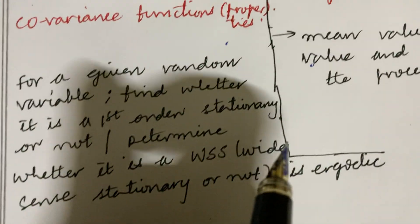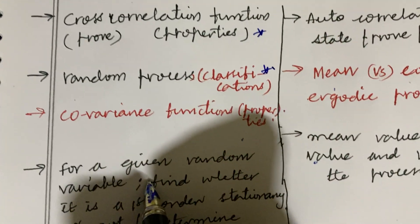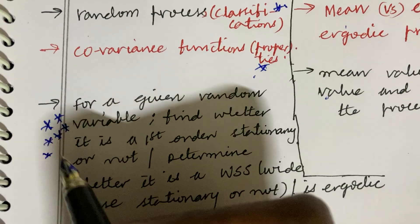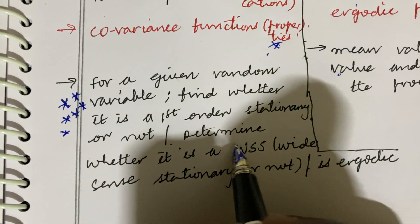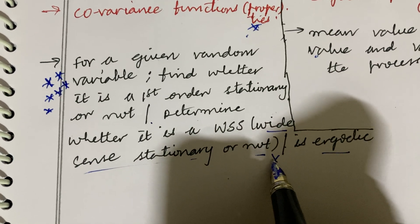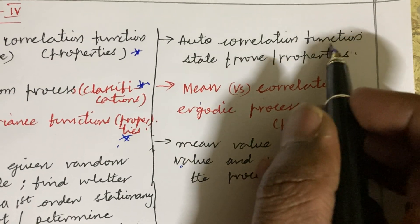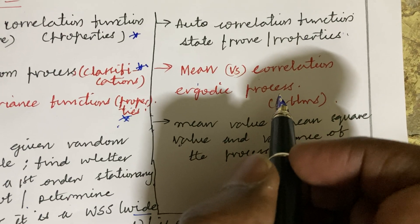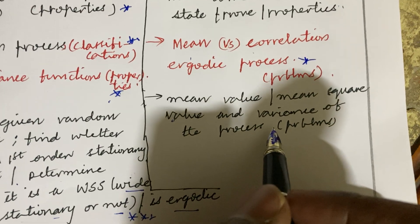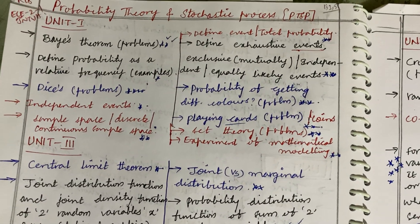Later I have come up with Unit 4. Cross-correlation function — state, prove, and properties. Random process — classify them. Covariance functions and their properties for a given random process is a damn sure question. Find whether it is first-order stationary or not, or determine whether it is Wide-Sense Stationary (WSS) or not — this is a very important one-shot question. Auto-correlation function — state, prove, and properties — may occur in long and short questions. Mean versus correlation, ergodic process, and related problems — mean value, mean square value, and variance of the process — definitions as well as problems.